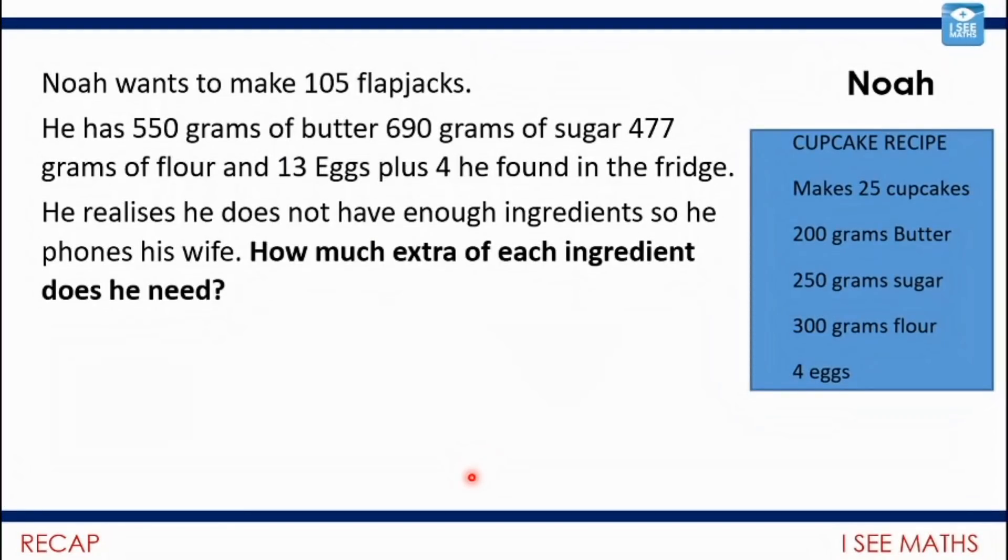Now I have to start today's video with a little apology to Noah because I'd said to Noah I'd love to include your question next week. I saved his work and then I didn't actually find it when it came to put the videos together. So we have this recipe here and Noah wants to make 105 flapjacks. He has 550 grams of butter, 690 grams of sugar, 477 grams of flour and 13 eggs plus 4 he found in the fridge. He realizes he does not have enough ingredients so he phones his wife. How much of each ingredient does he need? Well Noah, brilliant question, it made me laugh. Isn't it good having a supportive spouse when you forget things. Thank you so much for sending it through.